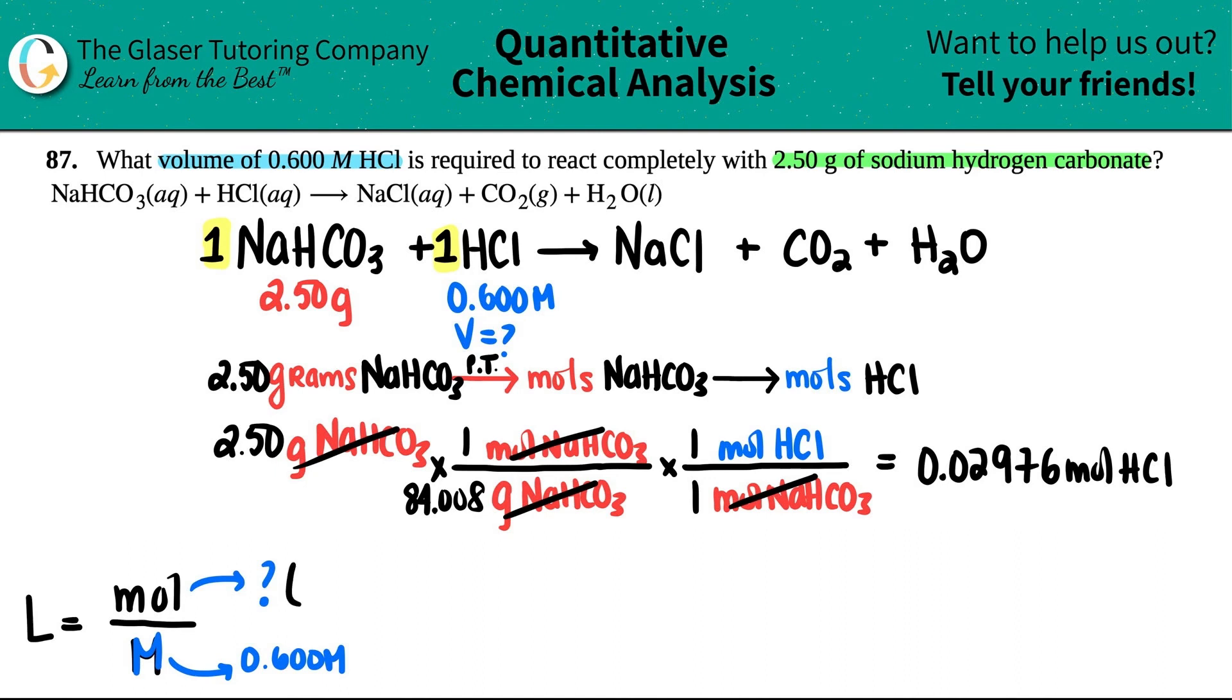Now I know that this is 0.02976 moles. And what volume, I'm looking for the liters. So all that it is, I know, you know, I now know that I have the correct units. So I'm not even going to bother putting them in, because I know that it's mole and molarity. So mole on top, 0.02976 divided by the 0.600. And let's see what we get. 0.02976 divided by 0.6.